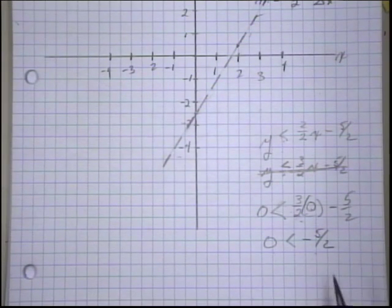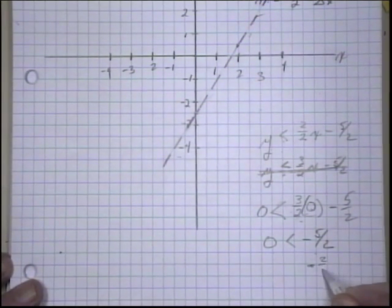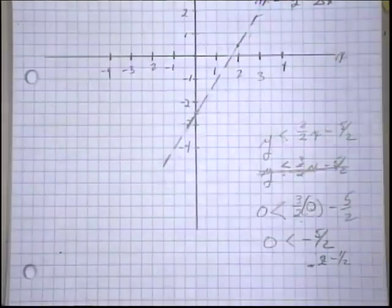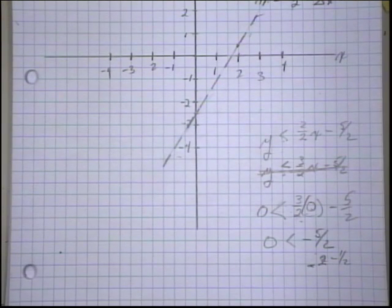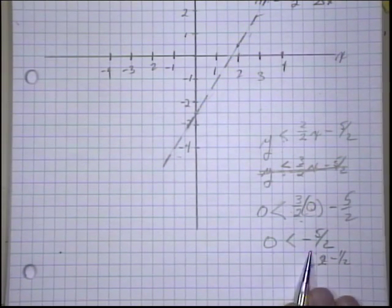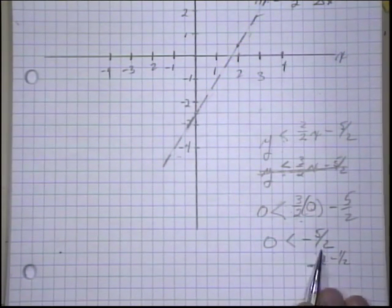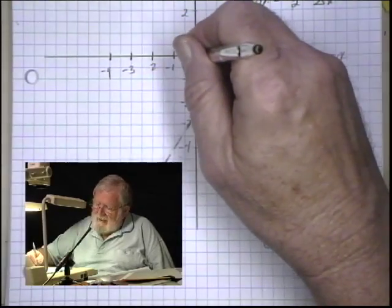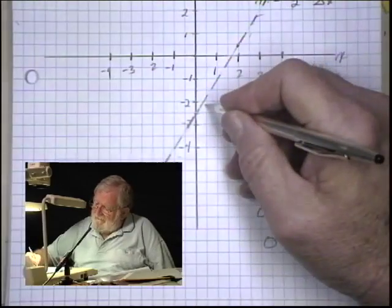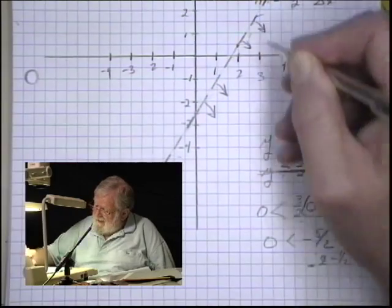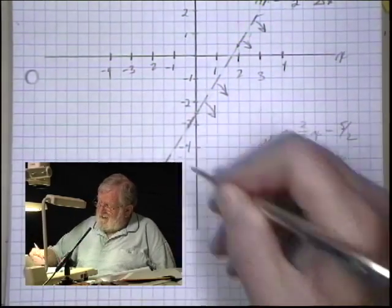Well, no. Minus 5 halves, remember, is a minus 2 and 1 half, which is over here someplace, right? So 0 is not less than a minus 1 half. Minus 1 half is less than 0. So it's not on this side of the line. The graph has to be on this side of the line. The inequality is on this side of the line.